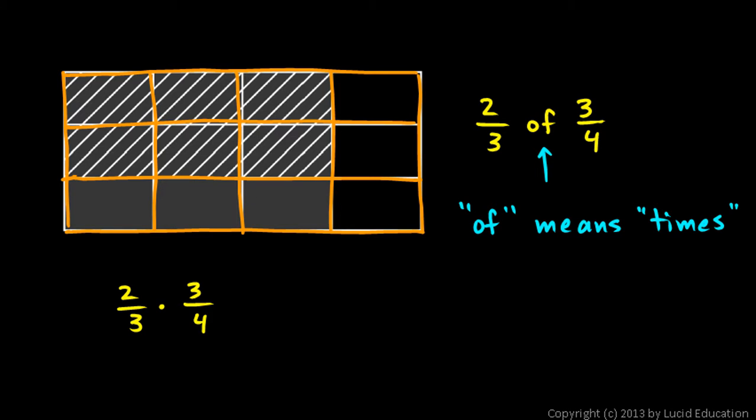So we can write this as an equation. Two thirds times three fourths equals six twelfths. And look at these numbers and notice this. Look, see the two and the three, those multiply to give me six. And what I'm doing here is multiplying.